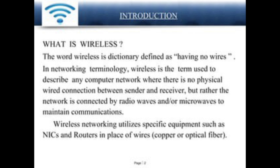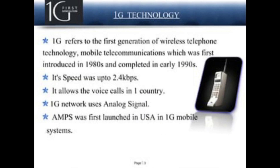Wireless networks utilize specific equipment such as NICs and routers in place of wire, copper, or optical fiber. The first generation of wireless telephone technology, mobile telecommunication, was first introduced in 1980 and completed in the early 1990s. Its speed was up to 2.4 kbps. It allowed voice calls in one country. The 1G network used analog signals, and AMPS was first launched in the USA in the 1G mobile system.